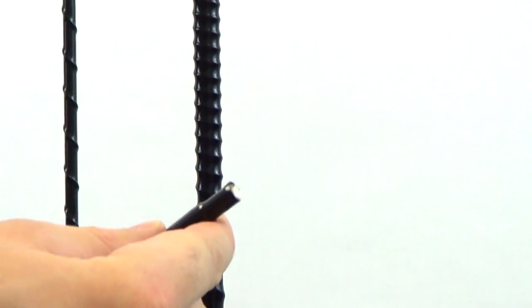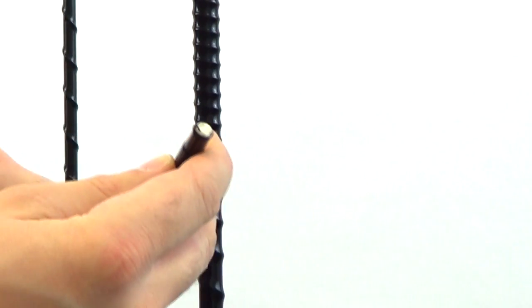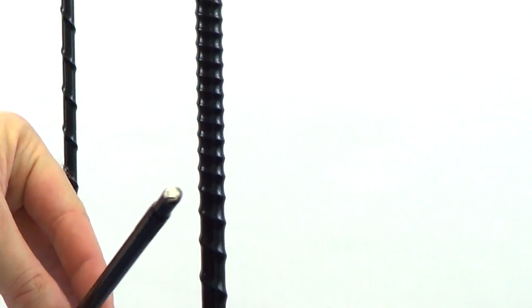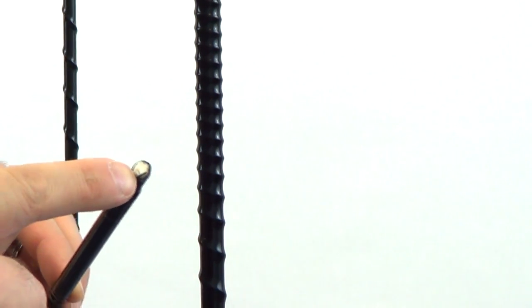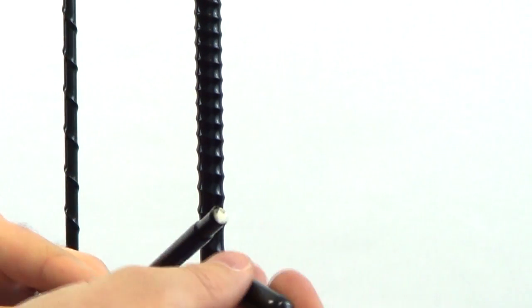One last one we'll look at here is this guy right here. And this is similar to the KW. Everhart's got several antennas like this. And if you look in the tip there, you'll see a little wire. You might not be able to see it on the video, but trust me, there's a little wire in there.